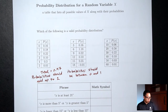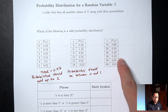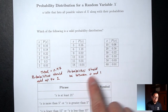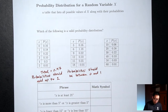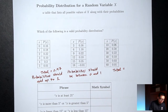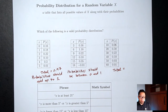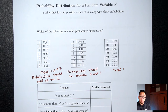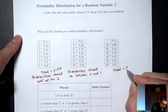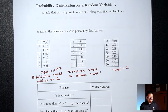That's why the first table is invalid too. Now the last table: are all probabilities between 0 and 1? Yes — first requirement checked. Now add them up: 0.06 plus 0.58 plus 0.22 plus 0.10 plus 0.03 plus 0.01 equals 1. So out of these three tables, the last one is the only valid probability distribution.